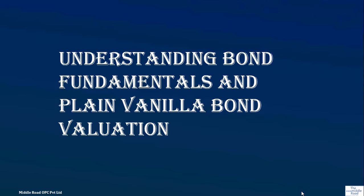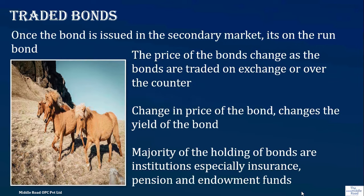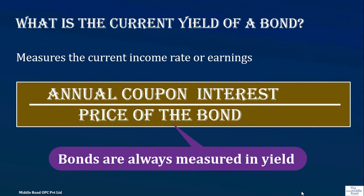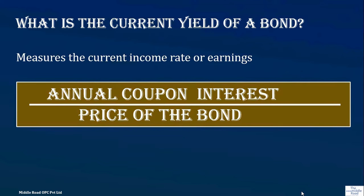Understanding bond fundamentals: when a bond is released it goes to the secondary market and is known as an on-the-run bond. The price of bonds changes as they are traded on exchange or over the counter. A change in the price of the bond causes a change in the yield. When we talk about yield, we are talking about current yield — which is the annual coupon interest divided by the price of the bond.